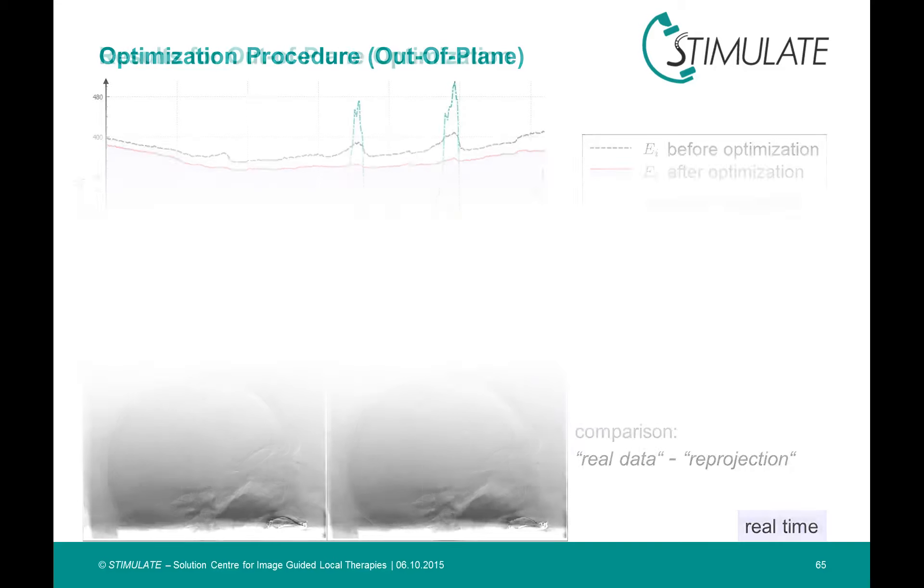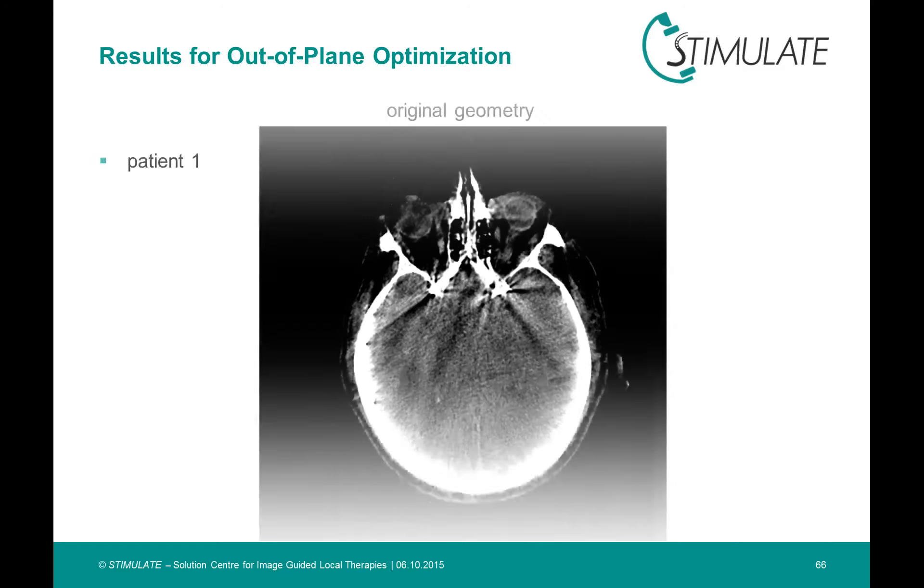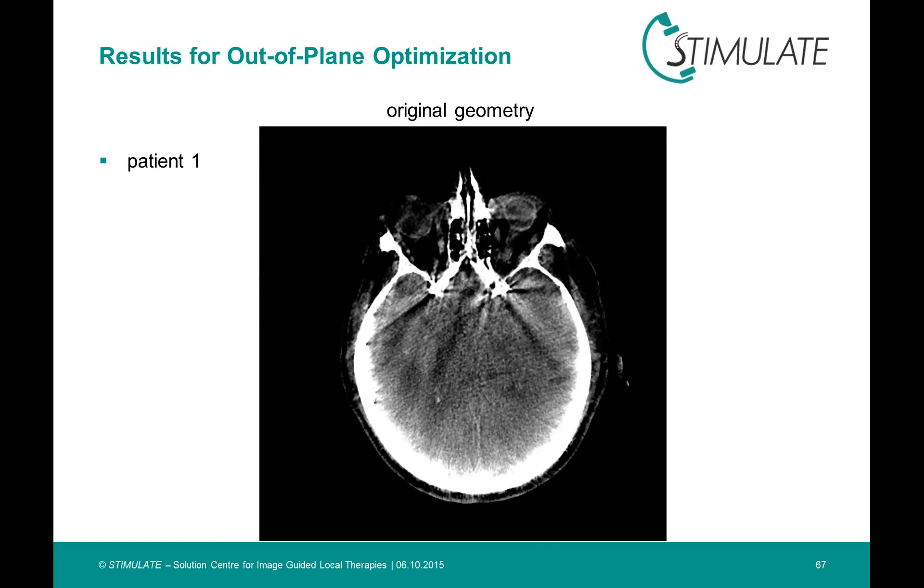So let's have a look at the reconstruction results. This is the reconstruction of the dataset we have seen before in the optimization, but here without the motion compensation. And this is after the correction.